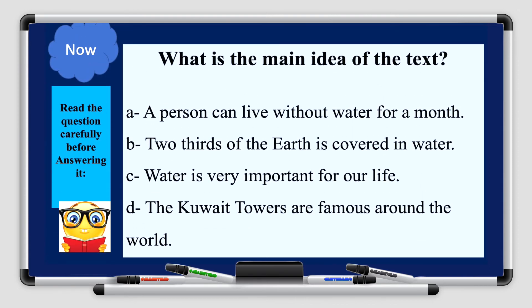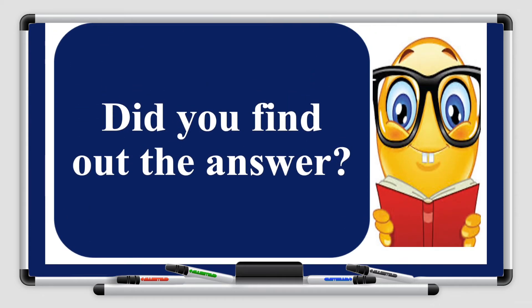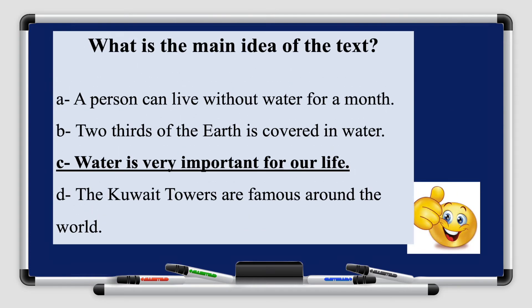Now I have a question for you. Read the question carefully before answering it. What is the main idea of the text? Let's read the options. A: A person can live without water for a month. B: Two-thirds of the earth is covered in water. C: Water is very important for our life. D: The Kuwait towers are famous around the world. The answer is C — water is very important for our life. How do you find the main idea? It should be a general idea; it shouldn't be specific.